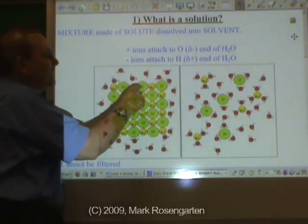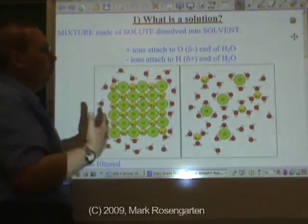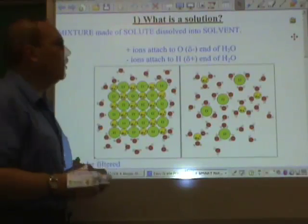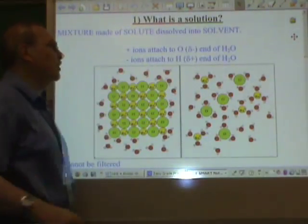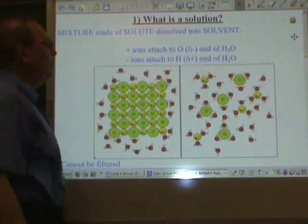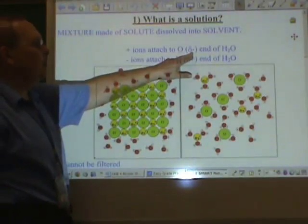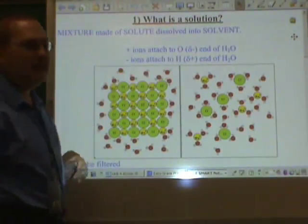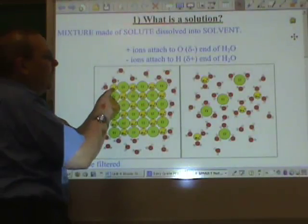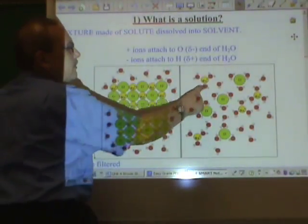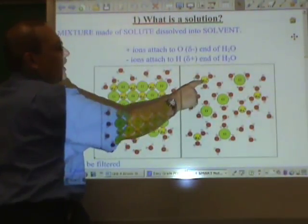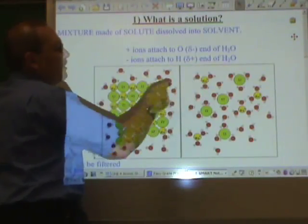Salt is made of positive and negative ions. Water, being a polar molecule, has partially negative and partially positive ends. Therefore, the partially negative end of the water molecule, the oxygen end, is attracted to the positive ions, specifically the positive sodium ions. That's why we have the sodium ion and these oxygens surrounding it.